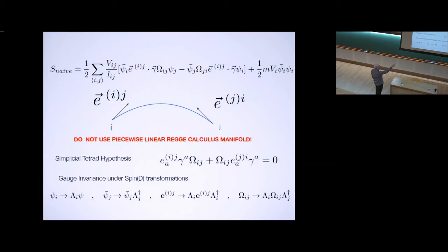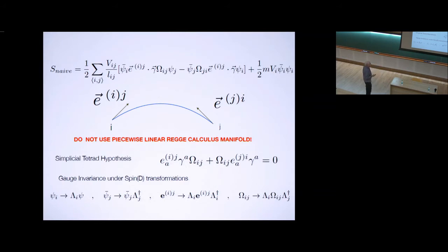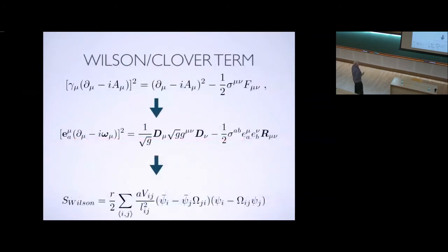But there has to be a consistency that if I parallel transport the tetrad from here to the other side, that it matches the one on the other side. That's called the tetrad hypothesis. This is exactly evaded on the lattice. And that is the discrete version of the tetrad hypothesis. And this is completely gauge invariant. Gauge invariance means that I can pick any tangent plane I want.